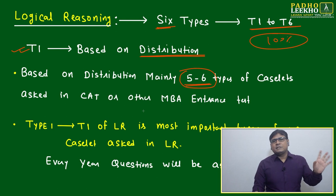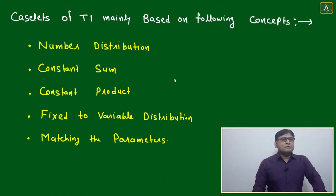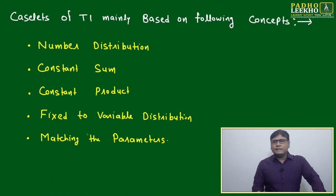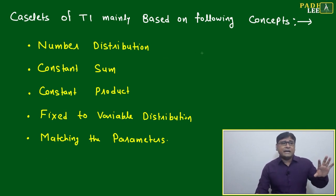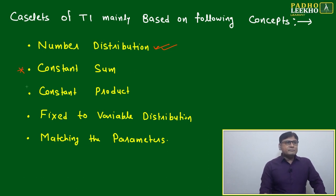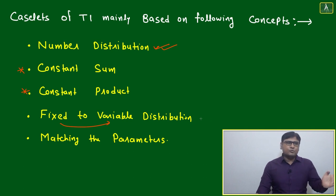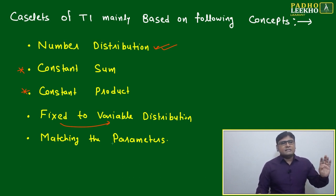T1 of LR is the most important type. Case sets of T1 are mainly based on these concepts: first, number distribution — the most basic concept; second, constant sum; third, constant product; fourth, fixed-to-variable distribution and vice versa; and fifth, matching parameters, features, or scope — which can be one-to-one or one-to-many matching.